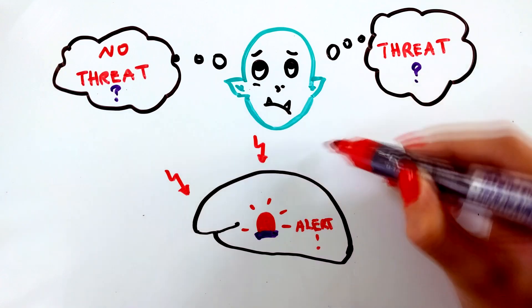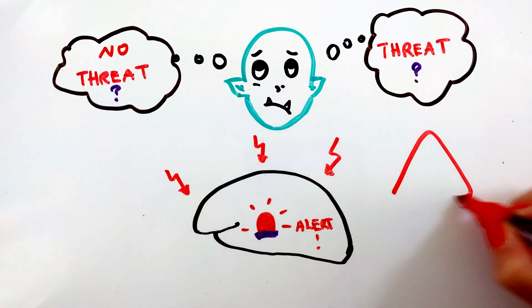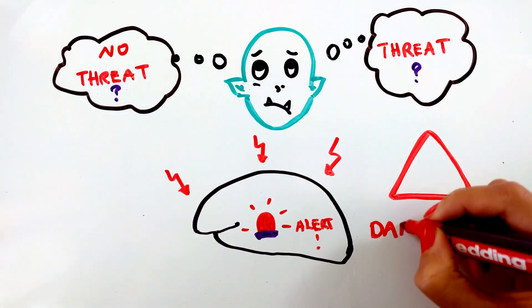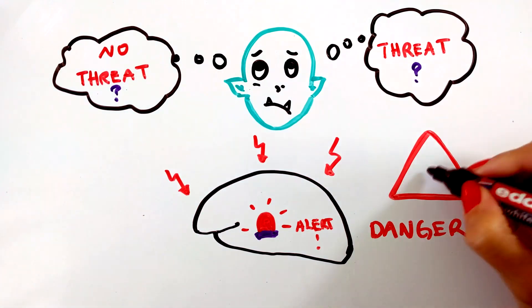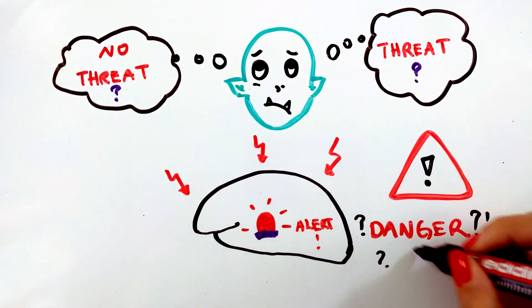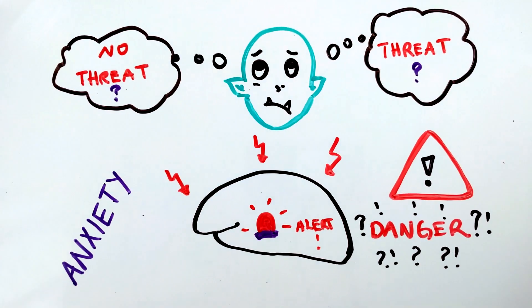Sometimes there is no threat, it is just our anticipation of it. However, our body doesn't like to take risks so the alarm system activates. This is anxiety, the fear of what may happen.